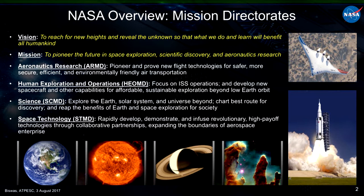The second mission directorate is human exploration and operations — the core of what NASA has been doing during the shuttle era. Right now it's focused on keeping the station alive, but also on the next generation of rockets: the Space Launch System and the Multi-Purpose Crew Vehicle known as Orion, which is going to take us places deep beyond the Moon. The third is the science mission directorate, covering Earth sciences, planetary sciences, astrophysics, and heliophysics. And the newest is the space technology mission directorate, which does innovations in technologies that assist the other three.